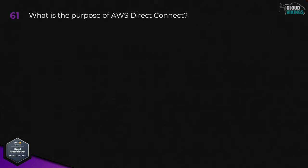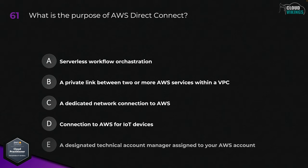Question sixty-one: what is the purpose of AWS Direct Connect? Options are: A, to support serverless workflow orchestration; B, a private link between two or more AWS services within a VPC; C, a dedicated network connection to AWS; D, connection to AWS for IoT devices; or E, a designated technical account manager assigned to your AWS account. The correct answer here would be C, a dedicated network connection to AWS.